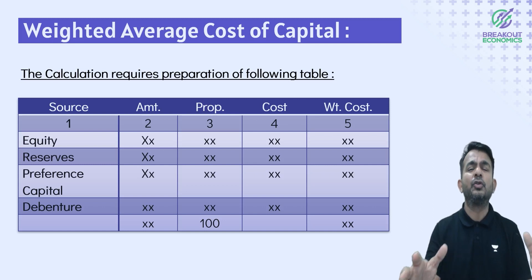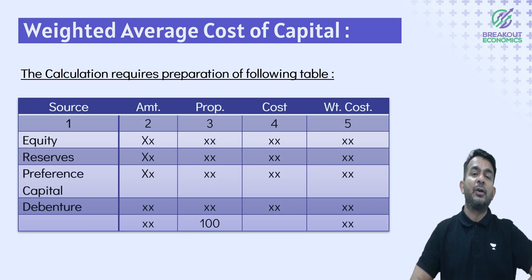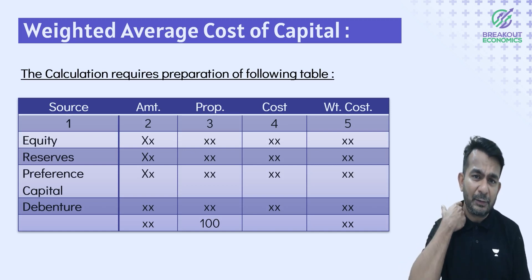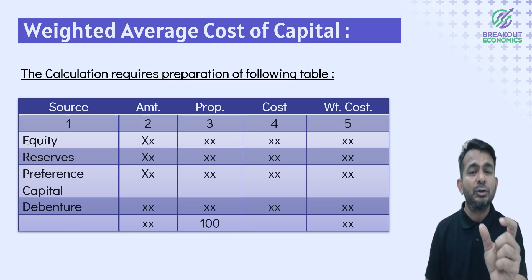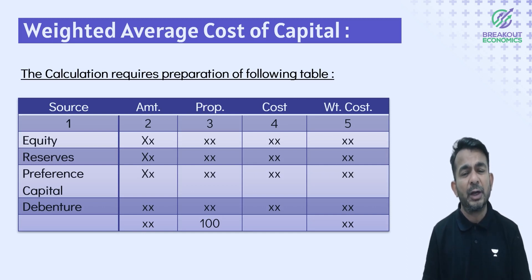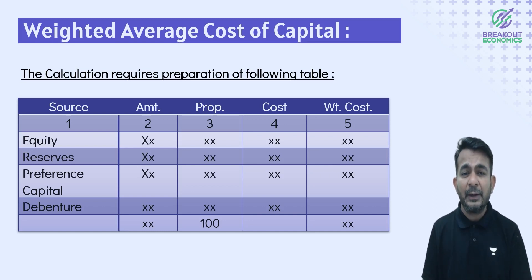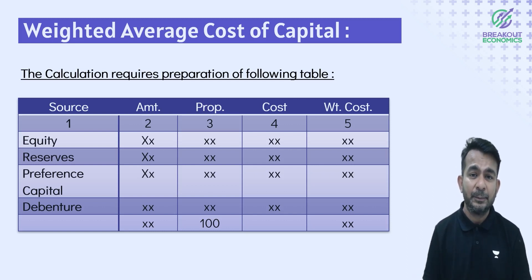Once all these costs are available, you calculate the Weighted Average Cost of Capital (WACC). The calculation is straightforward: first column is source/capital, second column is amount, third column is proportions — which can be based on book value or market value weights — then cost, and finally weighted cost.